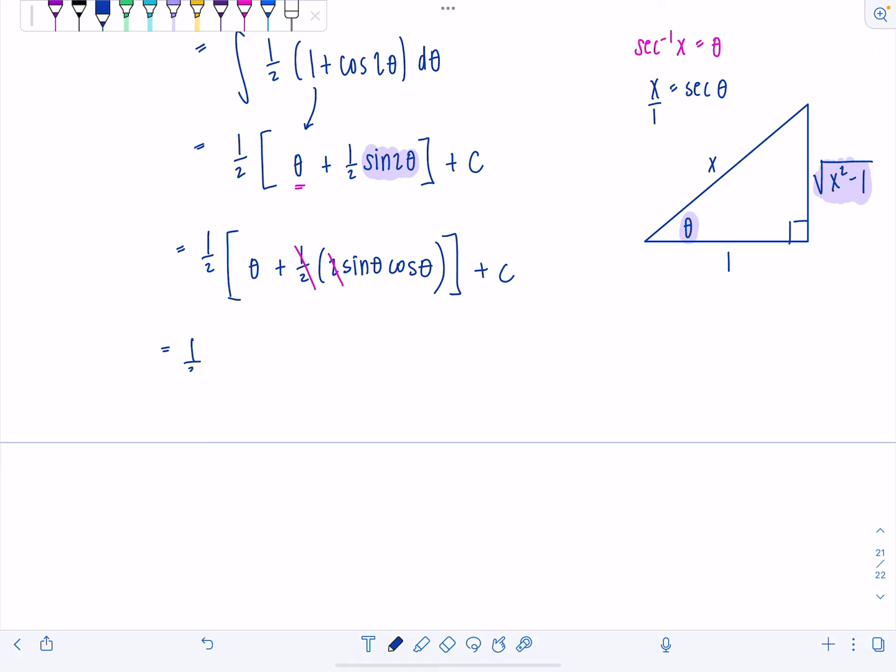And then now let's go back to writing everything in terms of x. So we've got one half. Instead of theta, I'm going to write secant inverse of x plus sine theta. Sine theta is going to be opposite over hypotenuse. So that would be rad x squared minus one over x times cosine theta. What's cosine theta? Adjacent over hypotenuse. One over x plus c.